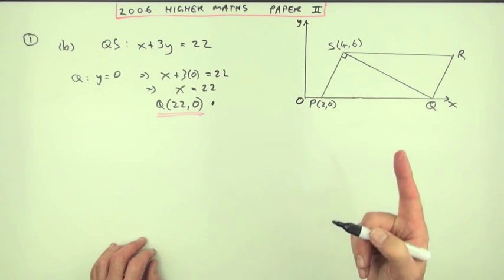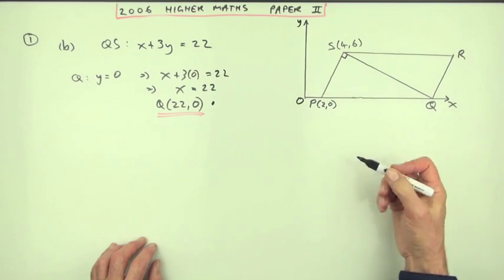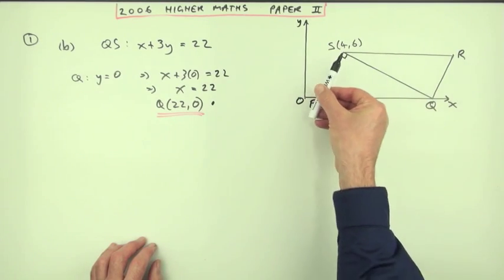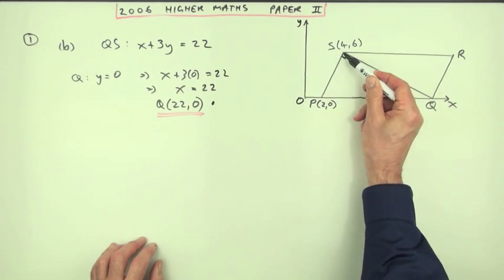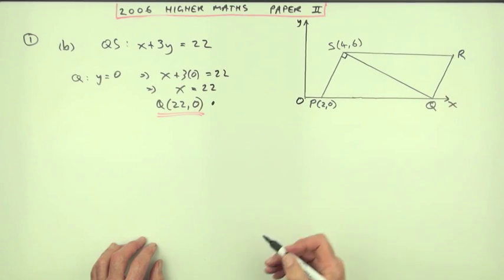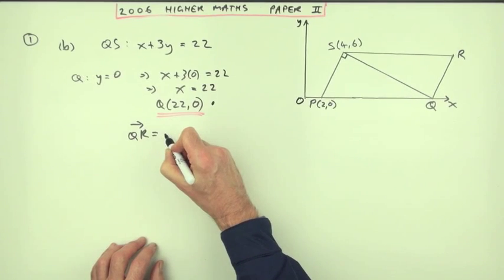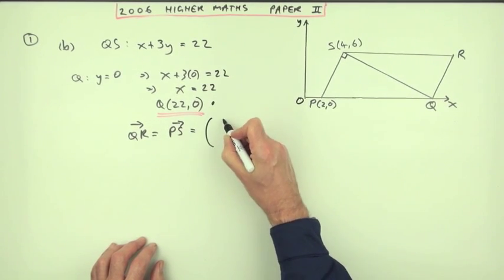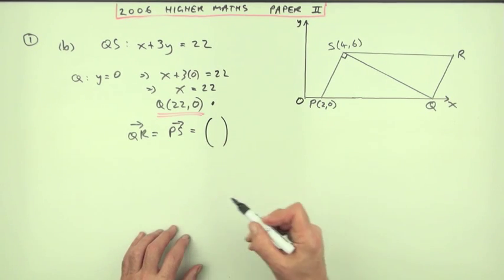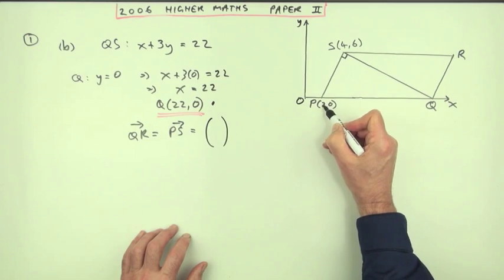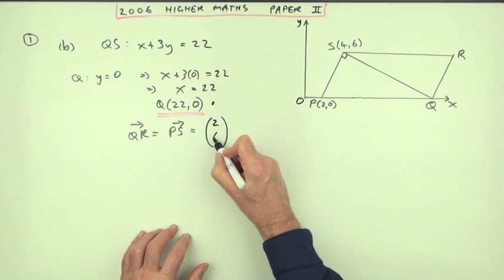Now for the point R. This is where displacements will come in, equal moves. Since it's a parallelogram, opposite sides are parallel and equal. Same distance, same direction. So the move from P to S is the same as the move from Q to R. So I know the move, Q-R. Q-R is the same as P-S. And I'll just put it down in component form, the vector form. How do you get from P to S? I'm not going to pull the working down. You can just use the numbers. How do you get from 2 to 4? You go 2 along. How do you get from 0 to 6? You go 6 up.